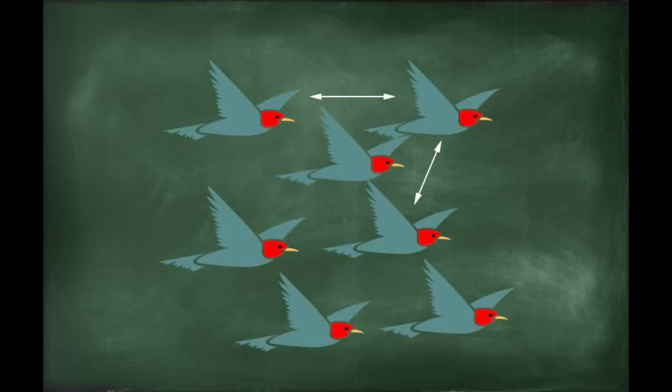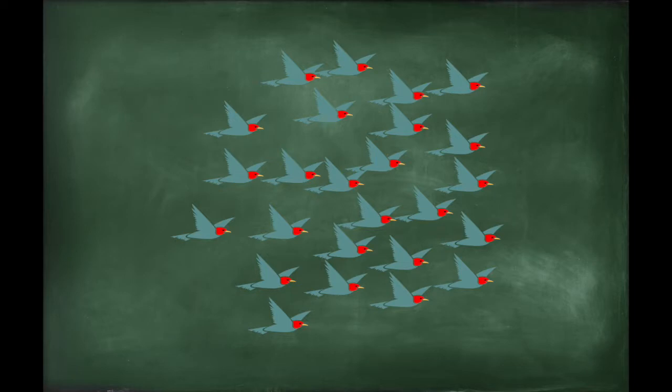This makes sense because birds would take information about where to turn from visual cues, so only birds they can directly see would influence them directly. The scientists suggest that birds take information from a small subset of neighbors, nc.